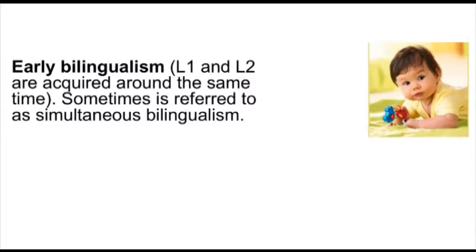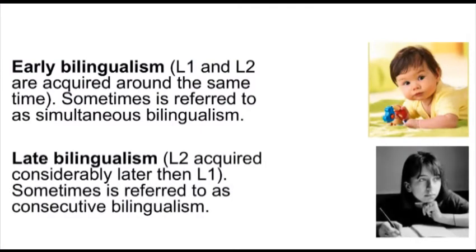We can classify types of bilinguals in different ways. I will start by classifying them according to the time in their life when they learned their other language. We have early bilingualism, where children and infants learn all of their languages at the same time, referred to as simultaneous bilingualism. It's almost incorrect to refer to something as the first and second language here, because all of them are acquired in parallel. Then we have late bilingualism, where the second language — or third or fourth, depending on how ambitious people are — is acquired considerably later than the first, often referred to as consecutive bilingualism.